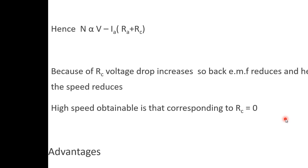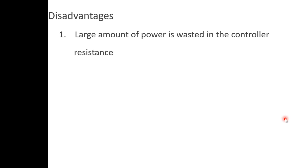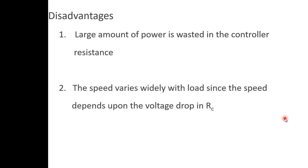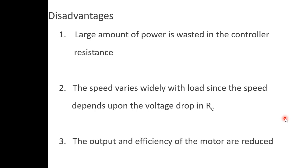The speeds obtained using the rheostatic or armature control method are all below rated speed. Disadvantages: a large amount of power is wasted in the controller resistance added externally in series with the armature; the speed varies widely with load since it depends on the voltage drop; the output and efficiency of the motor are reduced; and this method gives poor speed regulation. Compared to the field control method, the armature control method has many more disadvantages.